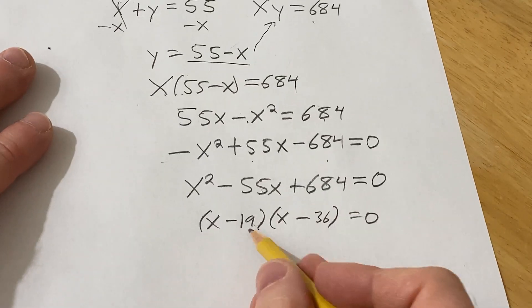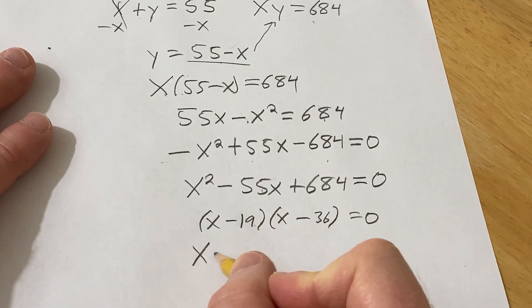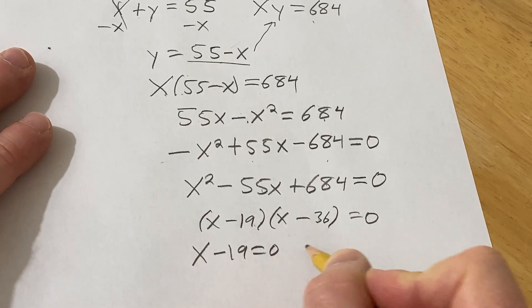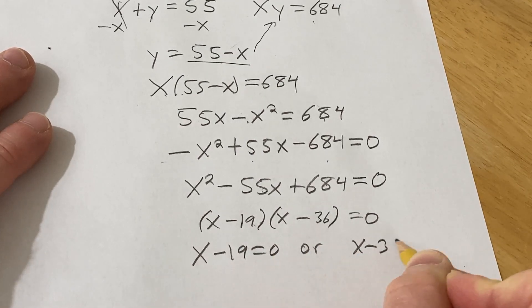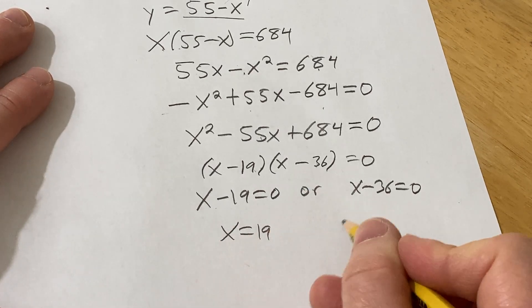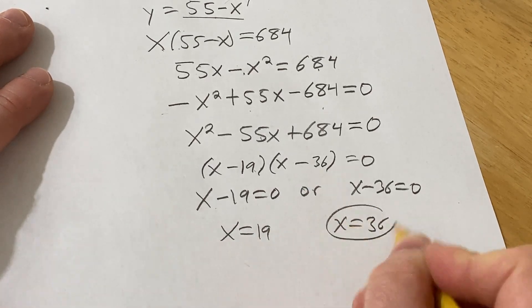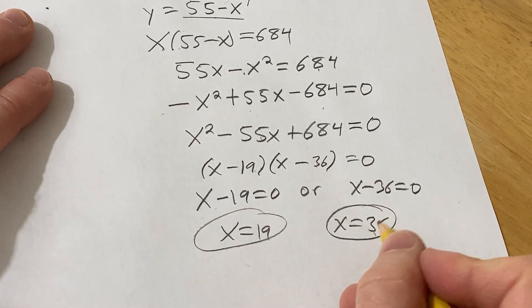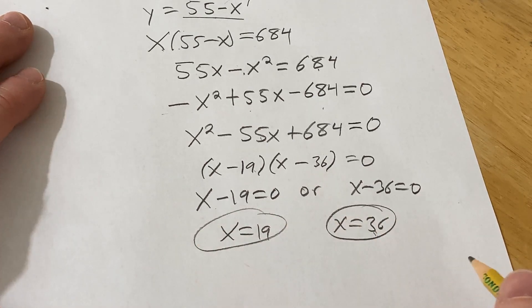We have a product equal to zero, so now you can just set each factor equal to zero. So x minus 19 equals zero, or x minus 36 equals zero. So here we get x equals 19, and here we get x equals 36. And so those would be the numbers that add to 55 and multiply to 684.